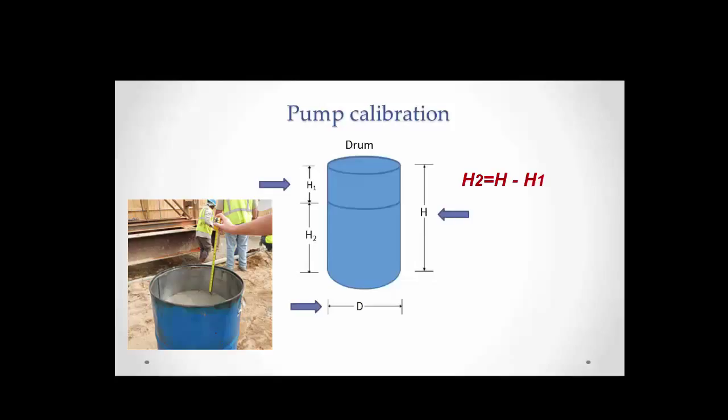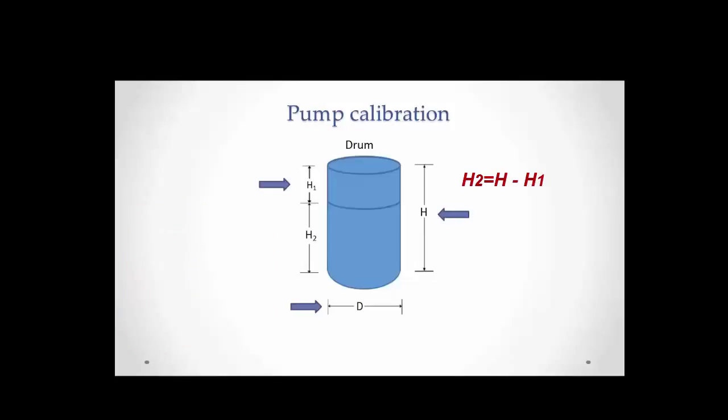Then we determine the height of grout by subtracting H₁ from H. We compute the volume by multiplying the area of the circle of diameter D times the height H₂ of the cylinder of grout.